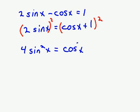You get cosine squared x plus cosine x times 1 doubled, so plus 2 cosine x, and then plus 1 squared, which is just 1.